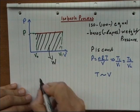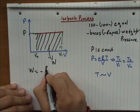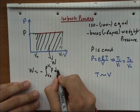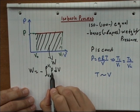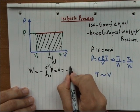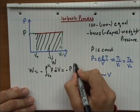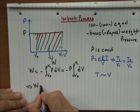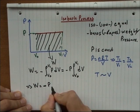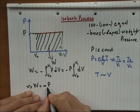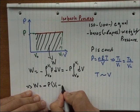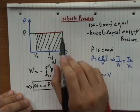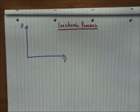We can find it again using the integral from V0 to V1 of P dV. But since P is constant, it can be taken outside of the integral. We are left with only the integral of dV, and so the work is simply P times V1 minus V0. Our shape is just a rectangle.